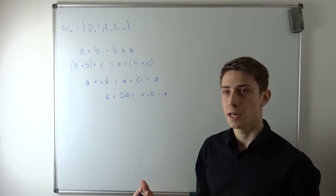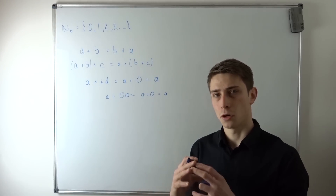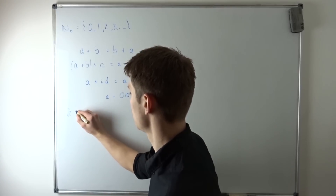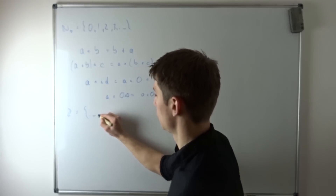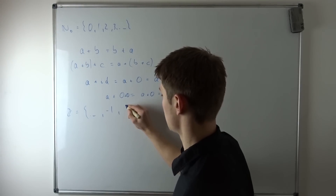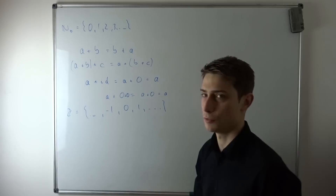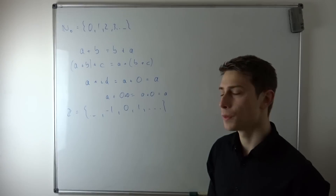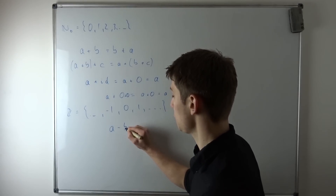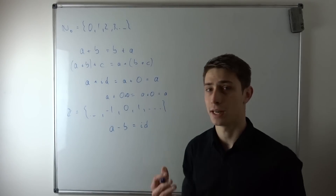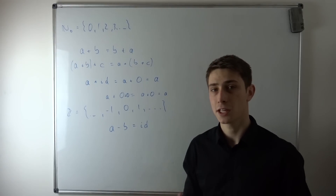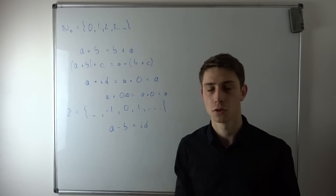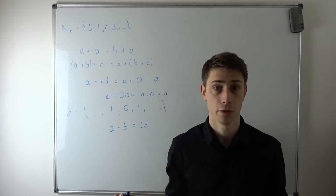We can expand this idea and go into the whole numbers. The whole numbers go from minus infinity up through minus one, zero, one, and up to positive infinity. Now there's one more thing we can do: we can say that a minus b can equal the additive identity zero, meaning there is a natural inverse to every element — the additive inverse of a, which you can also call a to the minus one power.